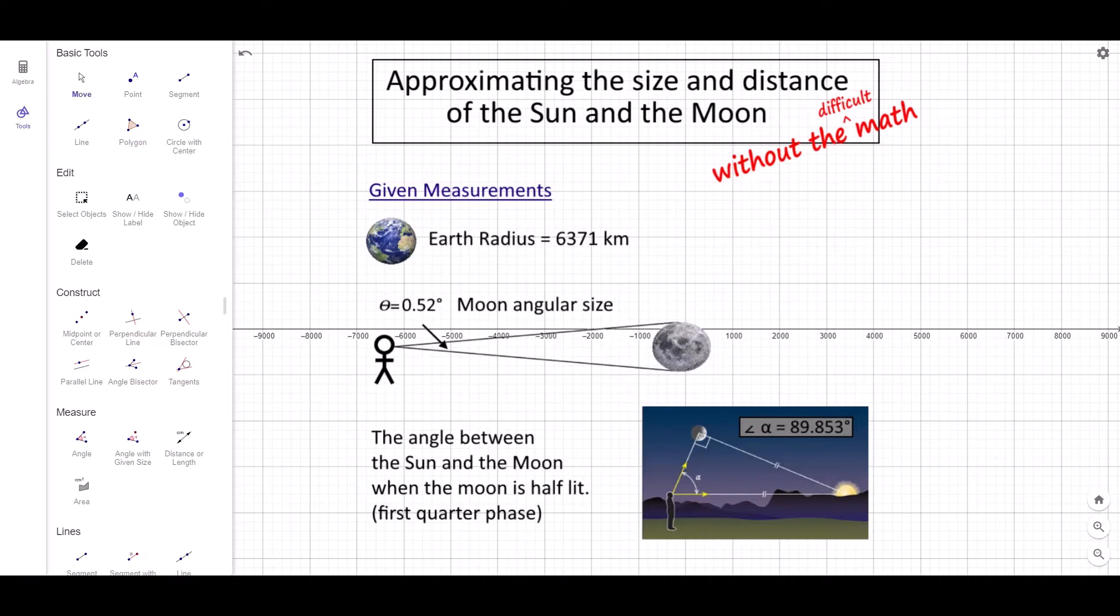The second is the Moon's angular size which is roughly half of one degree. The third is the angle between the Sun and the Moon when the Moon is exactly half lit and half in shadow. There was some old Greek guy about 2000 years ago who claimed this angle was about 87 degrees, but the true value is more like 89.853 degrees.